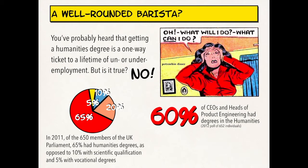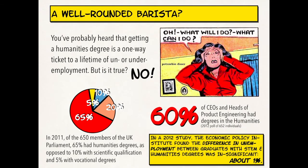In a 2012 study — and remember, 2012 is actually kind of a difficult time financially — the Economic Policy Institute found that the difference in unemployment between graduates with STEM degrees and humanities degrees was statistically insignificant, about 1%. This is in no way to bash STEM or technical degrees, but a lot of people will say humanities degrees help you understand art and beauty but you're not going to be employed. Well, it turns out that's not true.